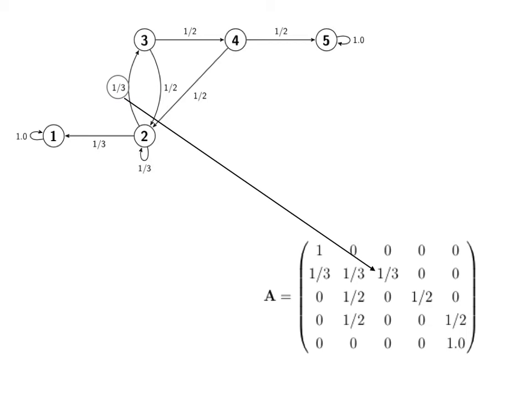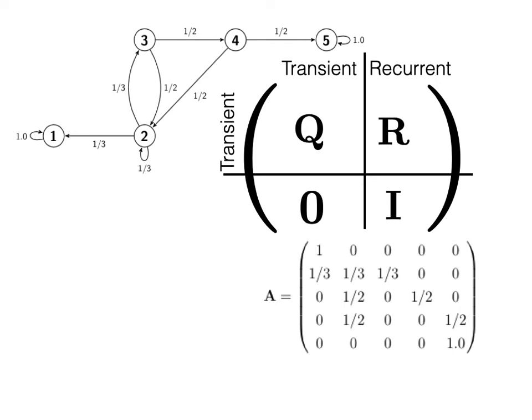Now recall from the discussion in the video on deriving the expressions for the hitting times and hitting probabilities that once we have extracted the transition matrix the first step in solving problems of this type is to partition up the transition matrix as shown here. The top left corner of the partitioned matrix Q should contain the conditional probabilities of moving from a transient state to another transient state. The top right corner of the matrix R meanwhile should contain the transition probabilities for moving from one of the transient states to one of the recurrent states. If we apply this process of partitioning to our transition matrix we can quickly see that the top and bottom rows of the matrix describe transitions that start in the recurrent states. These two rows of the matrix are thus uninteresting. All the elements of Q and R will be in the central three rows of the matrix.